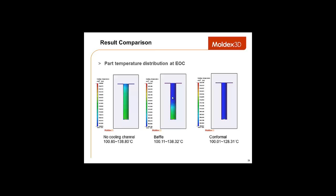Now, we can see the result on this slide. We can see the part temperature distribution at the end of cooling. And we can see that the temperature of the part at the end of cooling is reduced by 10 degrees Celsius using the conformal cooling channels.